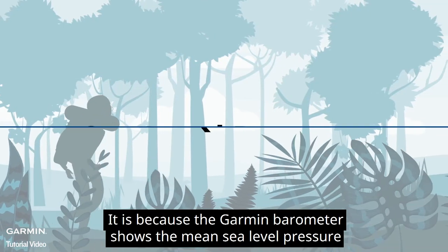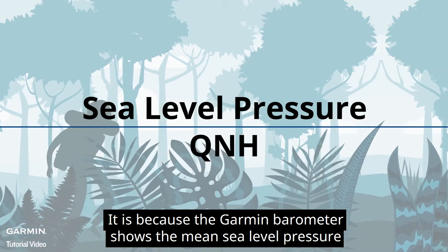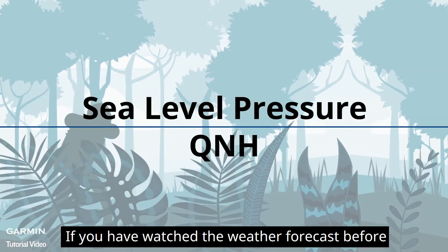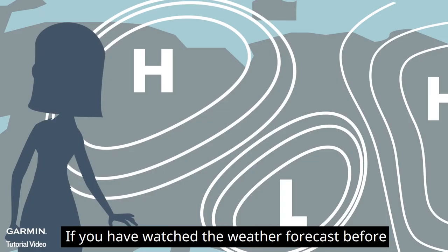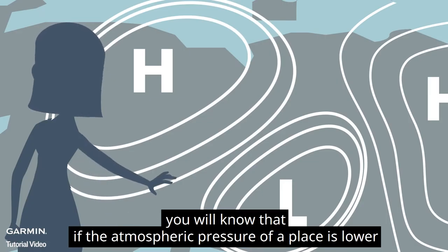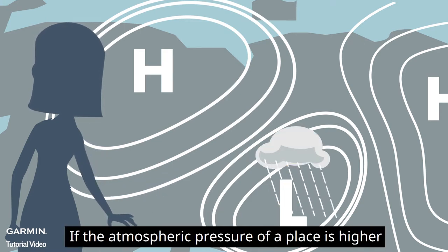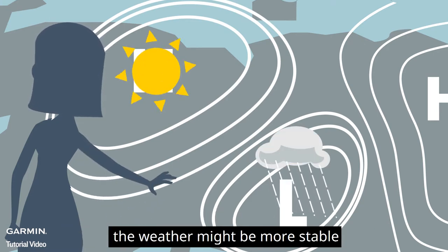It is because the Garmin barometer shows the mean sea level pressure. If you have watched the weather forecast before, you will know that if the atmospheric pressure of a place is lower, the weather might become worse.